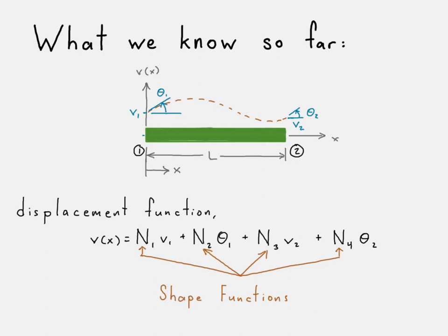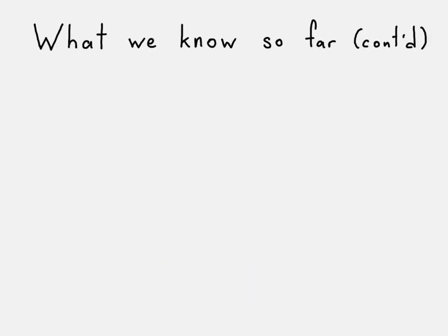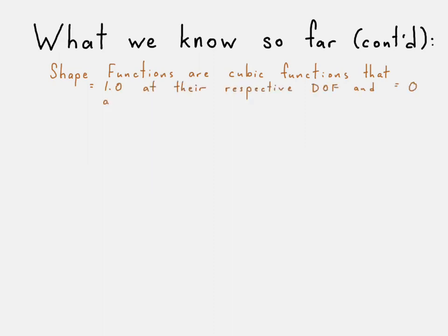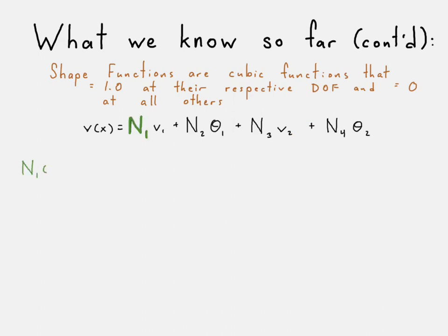That's what we know so far from a previous presentation. We can continue: the shape functions are cubic functions that equal 1.0 at their respective degree of freedom and 0 at all the others. We can write out each of the individual shape functions.